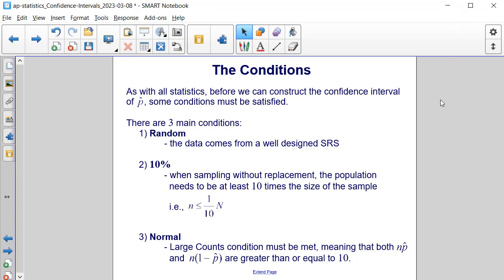And the third condition is that it must be normal. The large counts condition must be met, meaning that both n times the sample proportion and n times 1 minus the sample proportion are greater than or equal to 10.